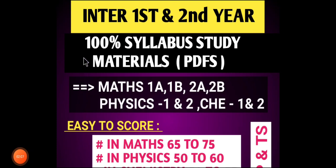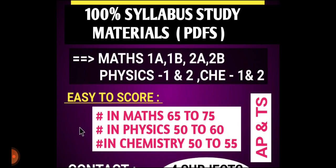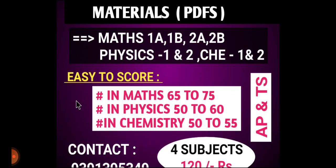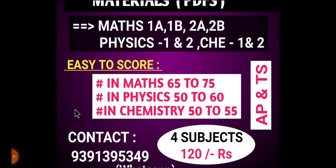Students, here is some good information. First year and second year 100% study materials and PDFs are available: Maths 1A, 1B, 2A, 2B; Physics first year and second year; Chemistry first year and second year. The expected scores are: Maths 65-75, Physics 50-60, Chemistry 50-55.